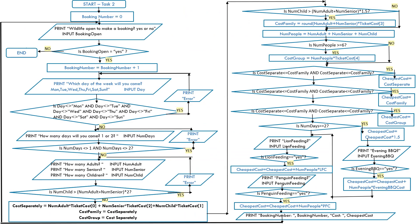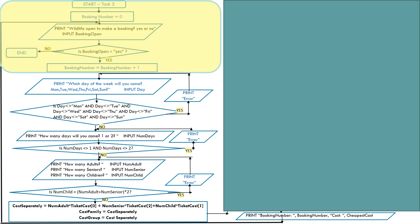Now let's look at task 2. This is the entire task 2 and task 3 on one sheet of paper. At the beginning, we initialize booking number to 0. Then we ask: is the wildlife park open to make a booking? Input booking open. Is booking open equal to yes? If it's not, then we end the program. If it's yes, we update booking number: booking number equals booking number plus one, which creates a unique booking number for each booking.